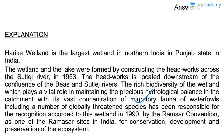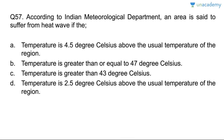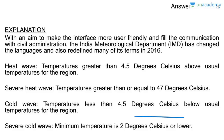Question fifty-seven: according to the Indian Meteorological Department, an area suffers from heat wave when temperature is 4.5 degrees Celsius above the usual temperature of the region. Answer is A. IMD has redefined its terms: heat wave is temperature greater than 4.5°C above the usual; severe heat wave is temperature greater than or equal to 47°C; cold wave is temperature less than 4.5°C below regional temperature; severe cold wave is absolute temperature of 2°C or lower.